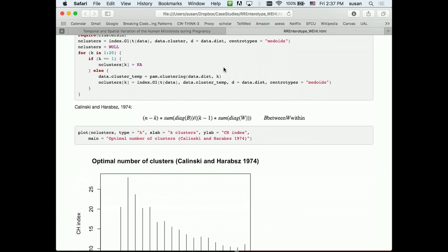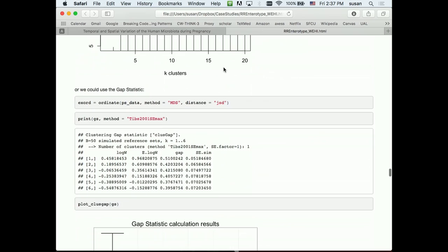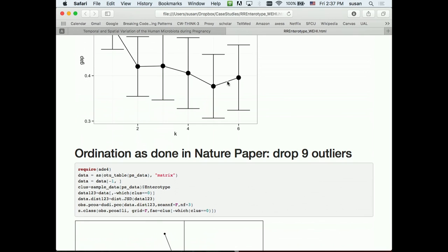But we actually have pretty good criteria, metrics, for deciding how many clusters there are. There's Kalinsky and Haribas as one method, which gave an optimal number of clusters at four and not three. You can use the gap statistic, which chose two.